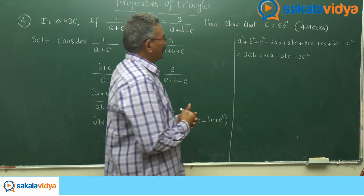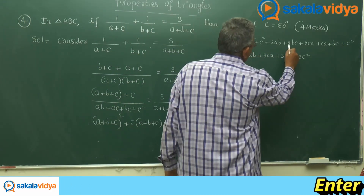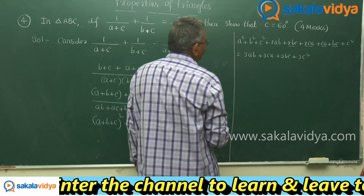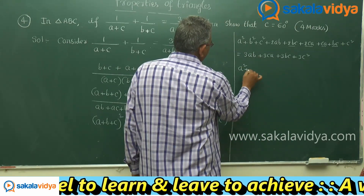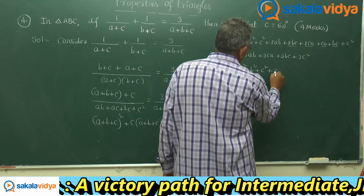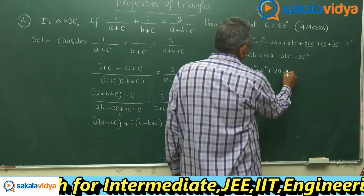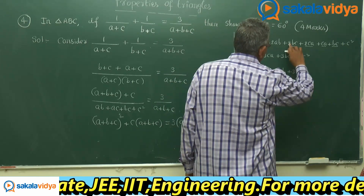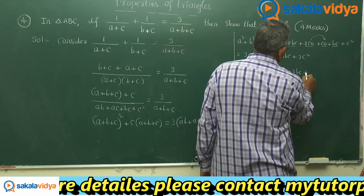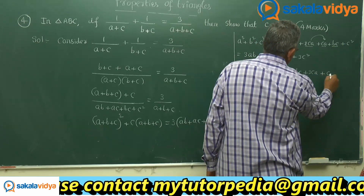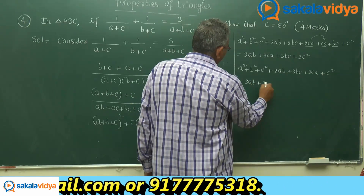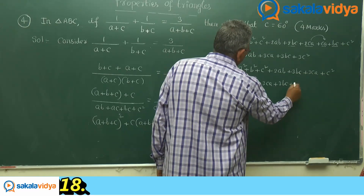Now this can be written again. Here 2BC and BC we have to simplify, and 2CA and CA as well. So this we can write: A square plus B square plus C square plus 2AB plus 3BC plus 3CA plus C square equals to 3AB plus 3CA plus 3BC plus 3C square.